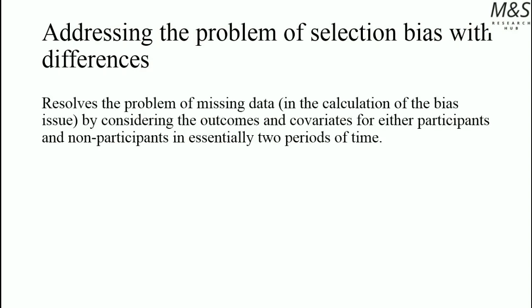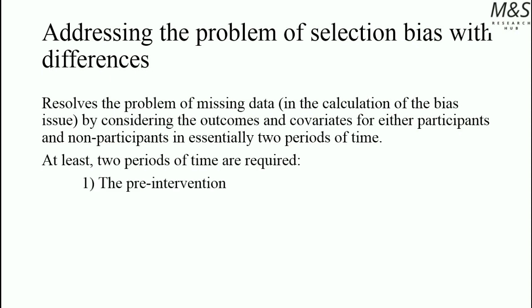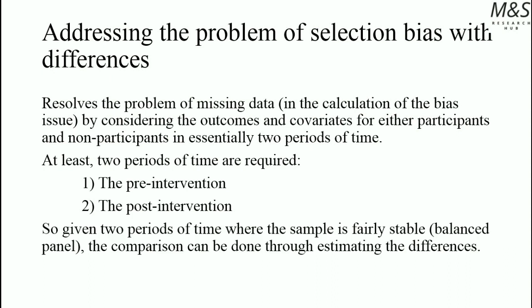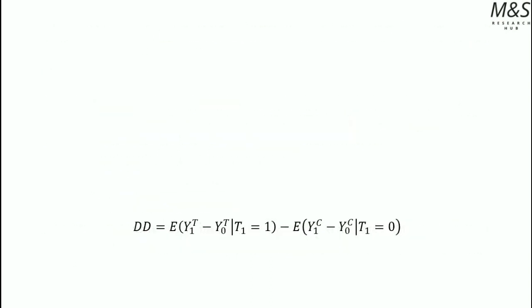Addressing the problem of selection bias with differences: the Difference-in-Difference Approach resolves the problem of missing data in the calculation of bias by considering the outcomes and covariates for both participants and non-participants in essentially two periods of time — at least two periods are required: the pre-intervention and the post-intervention. Given these two periods of time where the sample is fairly stable, the comparison can be done through estimating the differences.